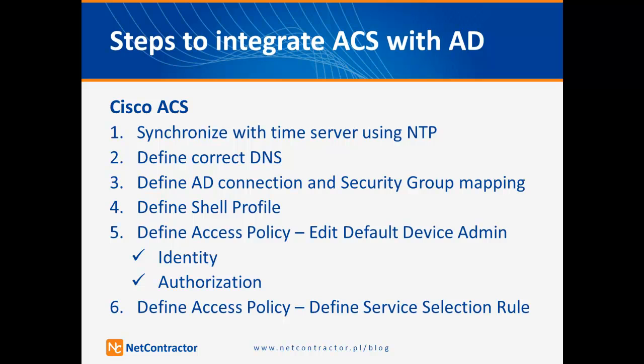At step two, you have to configure a DNS server to successfully resolve the domain controller IP address. Both step one and step two need to be done at the command line. At step three, you have to define the Active Directory connection and security group mapping. At step four, define a shared profile. At step five, define an access policy — we will use the default device admin policy. You have to configure identity under authorization, and at the last step, define the service selection rule.